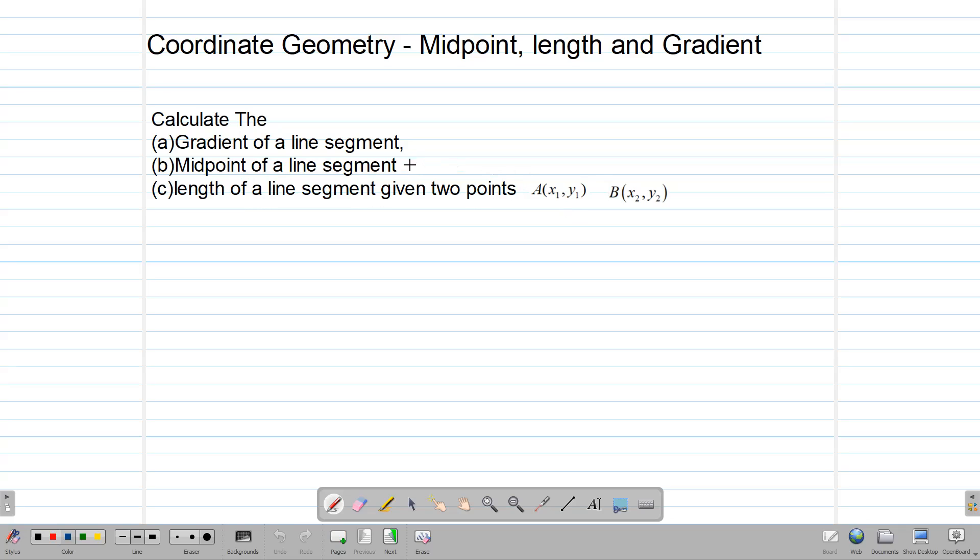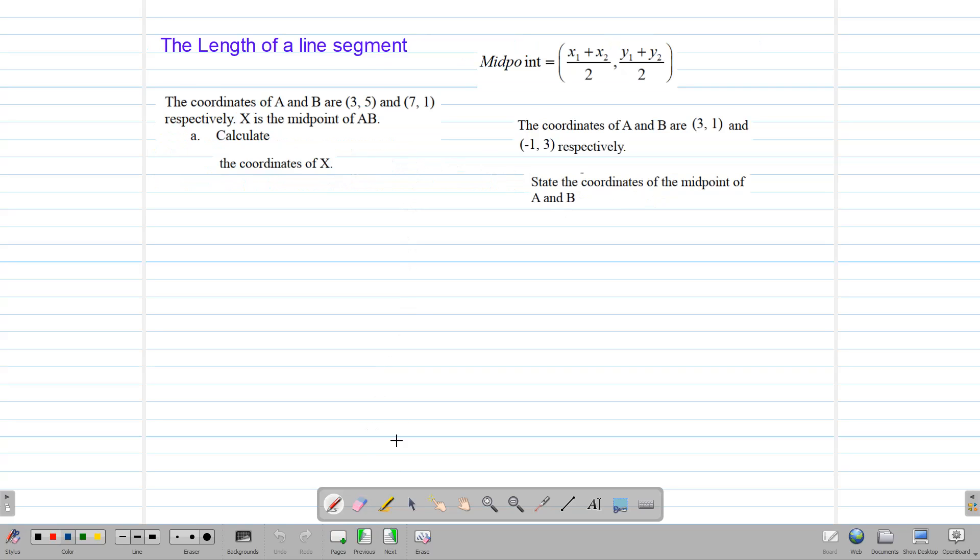We are going to start off first by looking at the midpoint of the line segment. So if we are asked to find the midpoint of a line segment, the midpoint of a line segment is found by adding the x numbers, adding the y numbers, and dividing by two. So we are going to add our x numbers. Our x numbers are 3 and 7. It helps to label them, so let's label them.